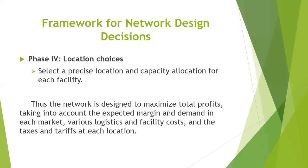Phase 4: Location choices. This is the fourth and last phase of network design. The objective of phase 4 is to select a precise location and capacity allocation for each facility. The network is designed to maximize total profit, taking into account the expected margin and demand in each market, various logistics and facility costs, and the taxes and tariffs at each location.